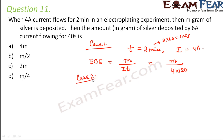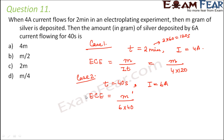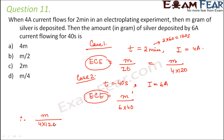In case 2, the time is 40 seconds and the current applied is 6 amperes. The electrochemical equivalent will be equal to m dash divided by i into t. In both cases, the value of electrochemical equivalent of silver remains the same — every metal has its own standard value of electrochemical equivalent. So we can say m divided by 4 into 120 is equal to m dash divided by 6 into 40.